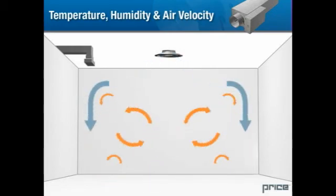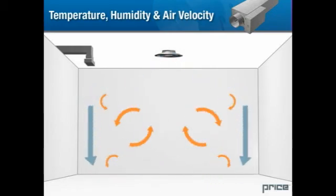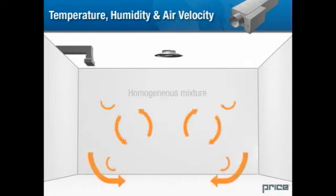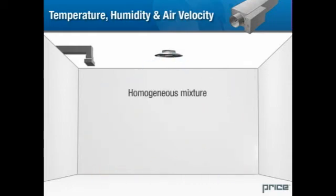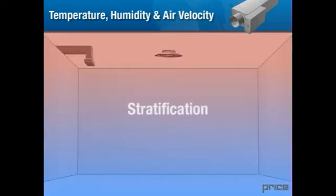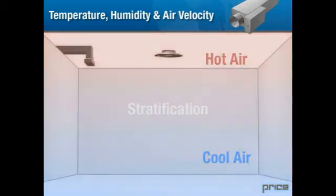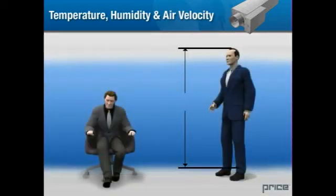In conventional mixing ventilation systems, we make sure to avoid thermal stratification and stagnation and that the room air is a homogenous mixture. Stratification occurs when air in a room divides itself based on temperature. The hotter air rises while cooler air falls.